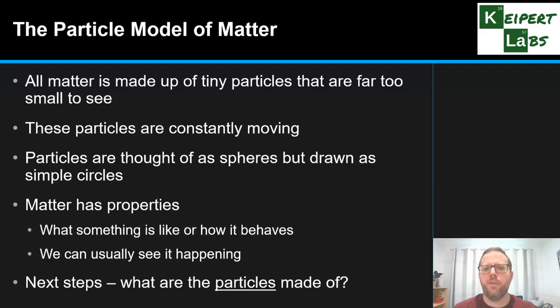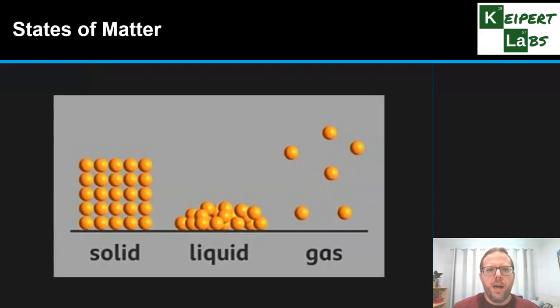And so then the next steps that we have is, well, what are the particles themselves made of? That's a question for a little bit further down the line in our understanding. And so the three main states of matter that we concern ourselves with at the start, this is unlikely to be new to you, are solid, liquid and gas. We can see a simple particle representation here, drawing them as simple circles, although they're shaded a little bit like spheres for a bit of extra visual detail.